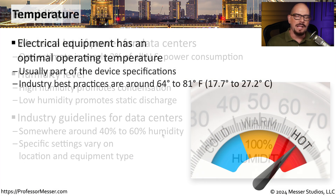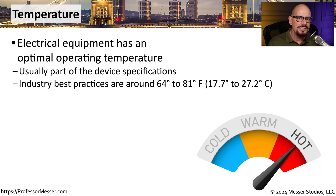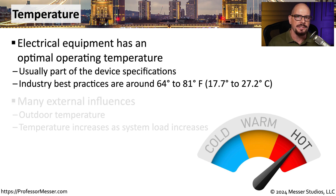A lot of this power also goes to keeping the data center cool. As this equipment is running, it's generating heat, and all of that heat needs to be cooled down. There is an optimal temperature range, and many data centers are trying to keep the temperature somewhere around 64 to 81 degrees Fahrenheit.